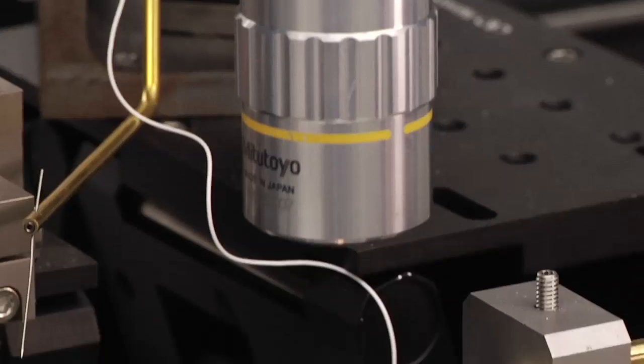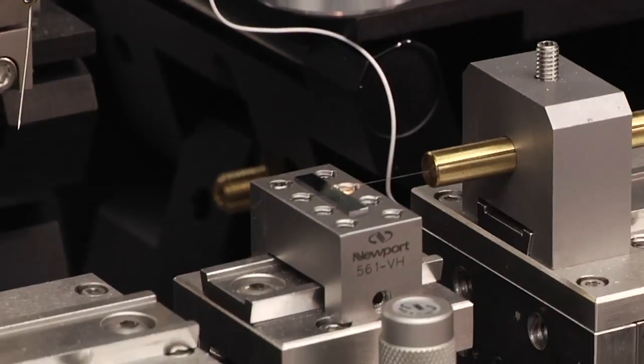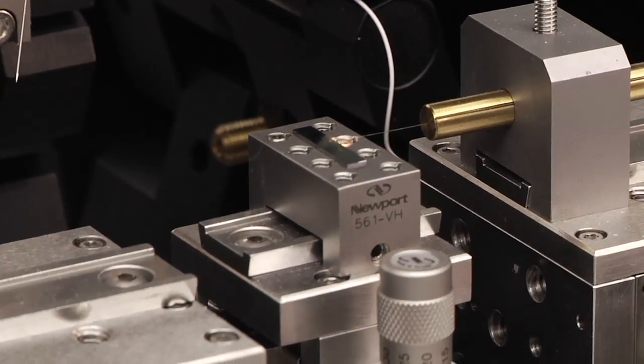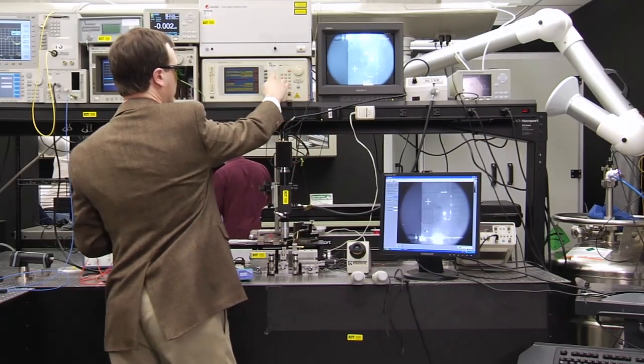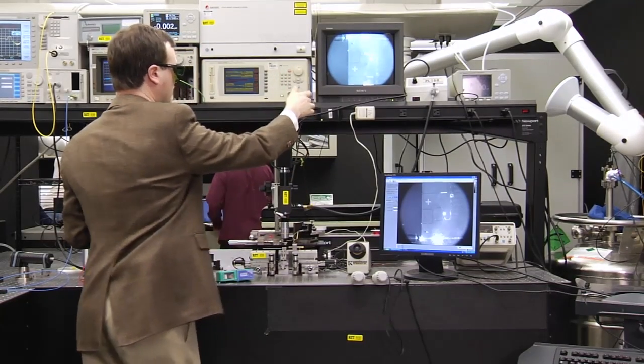We have a microscope that's able to magnify the image because the devices are really small, and we have our mechanism for getting the light on the chip which is a laser right here and an optical fiber.